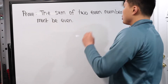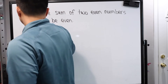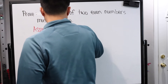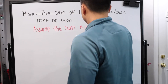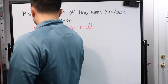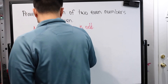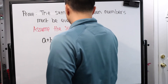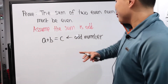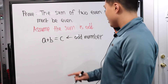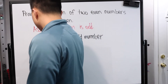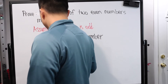Let's look at one more: the sum of two even numbers must be even. That's what we want to prove. So we're going to assume the opposite — assume that the sum can be odd. If that's the case, let's see what happens. We have two even numbers: A plus B equals C, where by our assumption C is an odd number. Since A and B are even, we can rewrite it as 2A₁ plus 2B₁ equals C, where C is still an odd number.